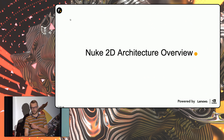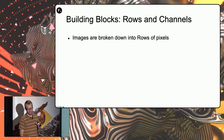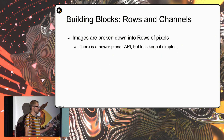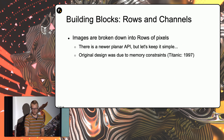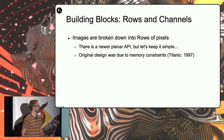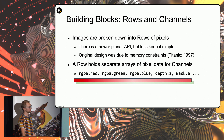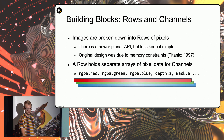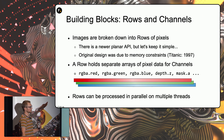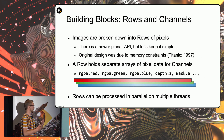Quick show of hands — how many people are familiar with the NDK? So hopefully this won't be boring to everyone. In Nuke, images are broken down into rows of pixels. There are other APIs for interacting with images, but I'm keeping it simple for the sake of time. Originally, I believe this design was due to the fact that Nuke was being used in production in the late 90s when machines were a lot less powerful. By breaking images up into rows, they were able to process large images without blowing up their hardware. Each row holds separate arrays of pixels for a number of channels — rgba.red, rgba.green, et cetera. An interesting corollary to building the processing engine on scanlines is that it's a pattern that can be parallelized fairly easily.